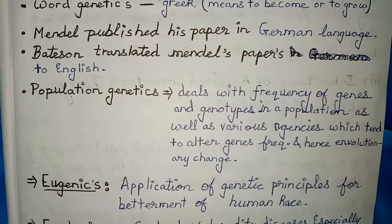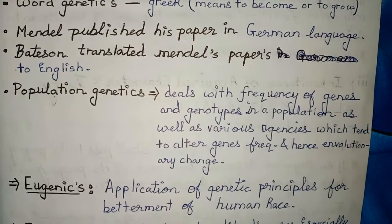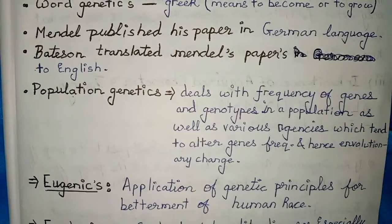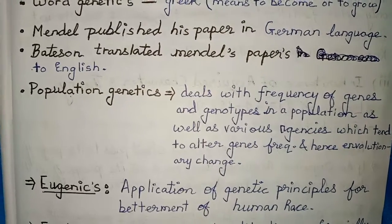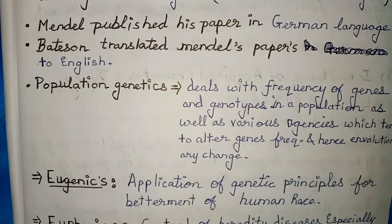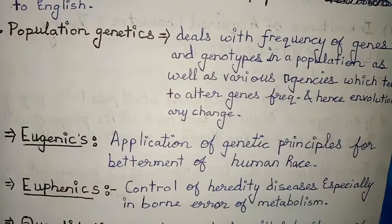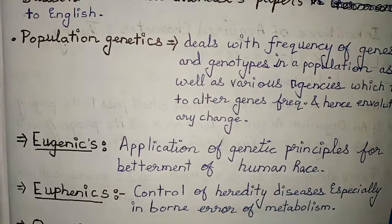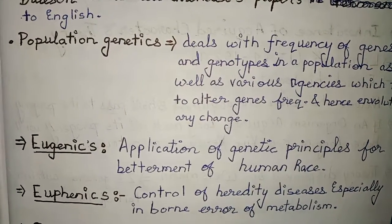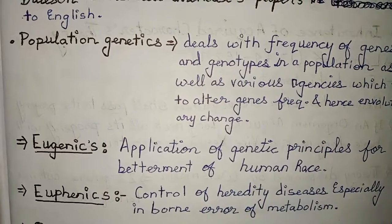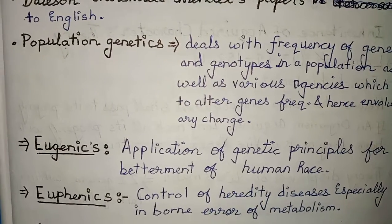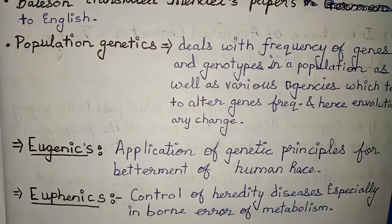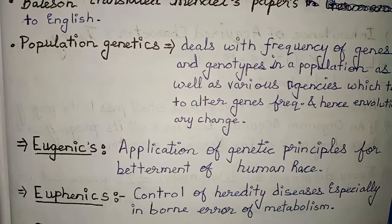Eugenics is the application of genetic principles for the betterment of the human race. It is related to human mankind and their betterment. Eugenics also involves the control of hereditary disease, especially inborn errors of metabolism. If there is a hereditary disease from a previous generation, we can control it through eugenics. It is specifically the application of genetic principles for human race betterment.